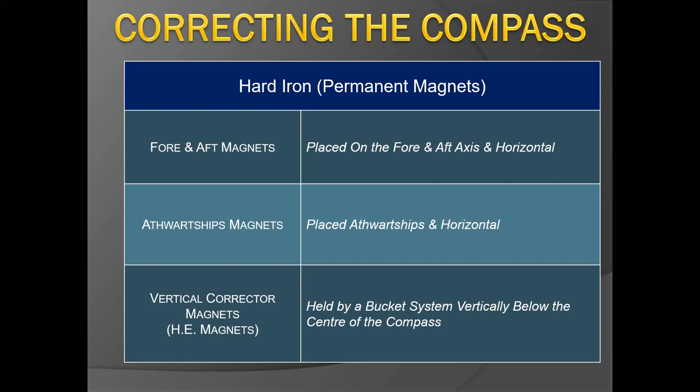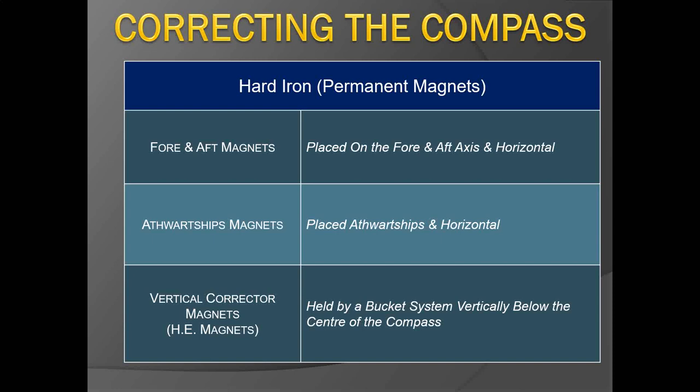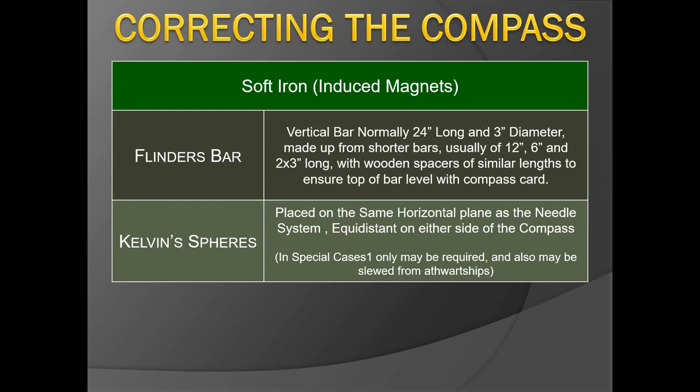The permanent magnets used for correction include the fore-and-aft magnets, athwartship magnets, and vertical magnets called heeling error magnets. A qualified compass adjuster uses these magnets to adjust for the ship's deviation. Soft iron or temporary magnets — called Flinders bars and Kelvin spheres — correct for the temporary or soft iron magnetism of the ship. These components are detailed in the video on parts of the magnetic compass.